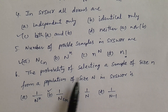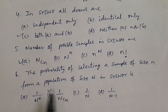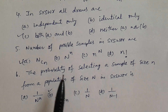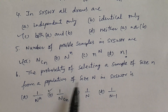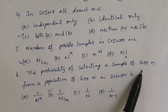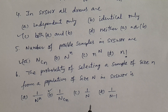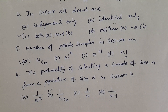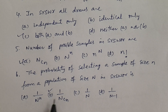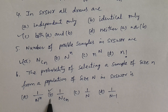Question number 6. The probability of selecting a sample of size small n from a population of size capital N in SRSWOR is? Total number of possible samples in SRSWOR is capital N C small n, so the probability is 1 by capital N C small n. Options: A) 1 by capital N power small n, B) 1 by capital N C small n, C) 1 by capital N, D) 1 by capital N minus 1. Answer is B, 1 by capital N C small n.